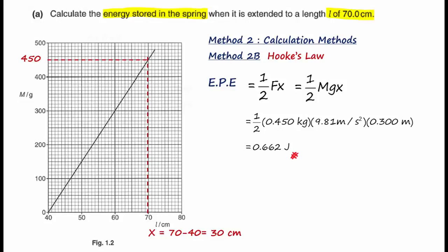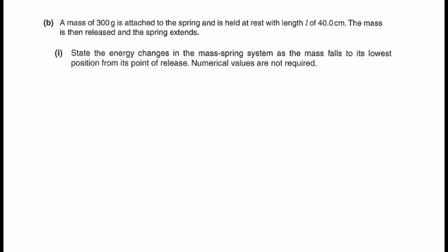Those are the methods for solving Part A. Now let us move to Part B. In Part B, we focus on the case where m equals 300 grams, initially held at rest with a spring length of 40 cm. For Part B(i), we are asked to state the energy changes in the mass-spring system as the mass falls from its point of release to its lowest position. This is a qualitative question requiring us to describe energy changes between two points of motion.